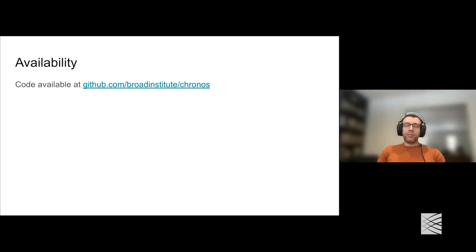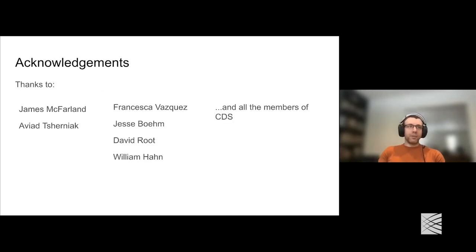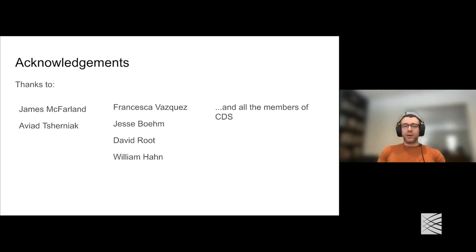Kronos is available now on GitHub. It's not currently available as a command line tool—it's designed to be run in a Python environment. There is a vignette as a Jupyter notebook; if you have Jupyter notebook and Python installed you can launch it and run through an interactive tutorial using a much reduced version of the DepMap dataset. Thanks to James McFarland and Aviad Cherniak who mentored me during this project, and to DepMap leadership including Francesca Vasquez, Jesse Boehm—who has now left DepMap but was essential during this project—David Root, director of GPP, Bill Hahn, and all other members of my group who provided much useful commentary.